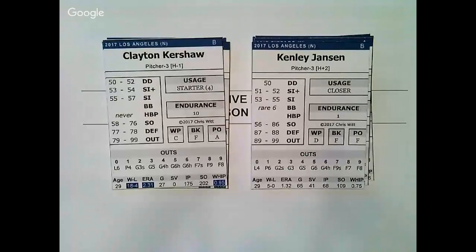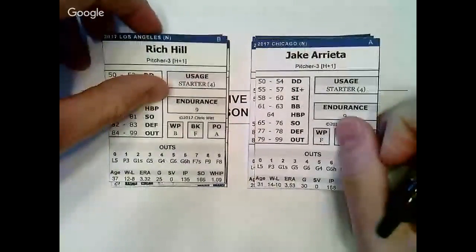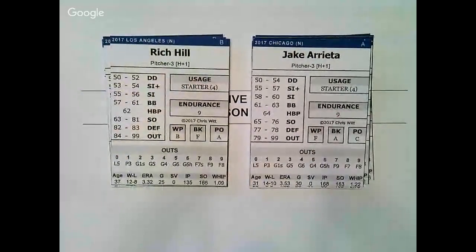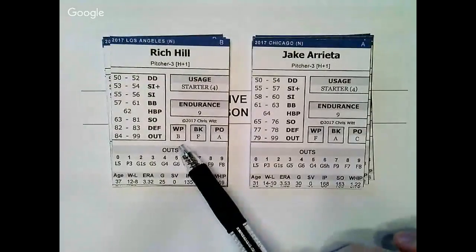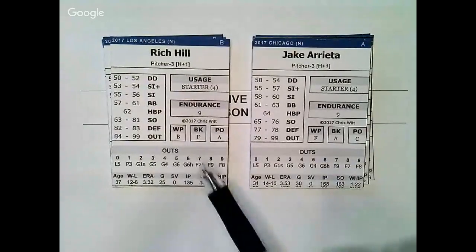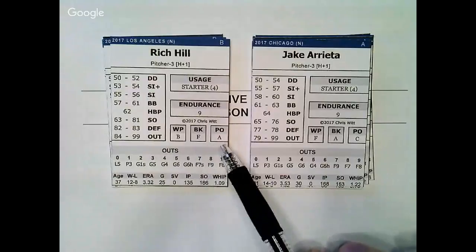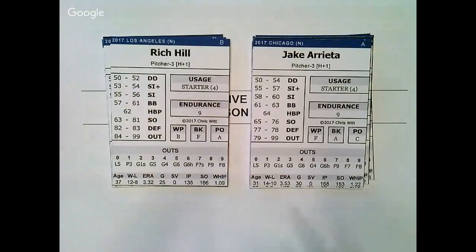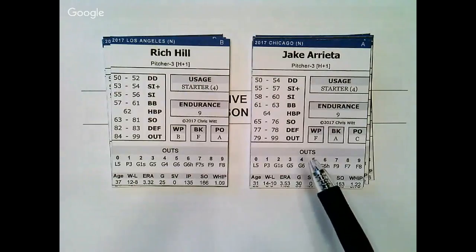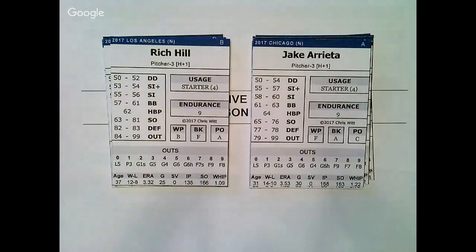Pitchers receive individual ratings for how frequently they allow wild pitches and balks, as well as how often they pick runners off. The card on the left will rarely throw a wild pitch, commit the occasional balk, and pick off a fair share of base runners. The other is nearly the opposite — frequently serving up wild pitches, never balking, and picking off runners at about a league average rate.